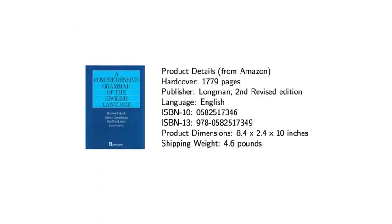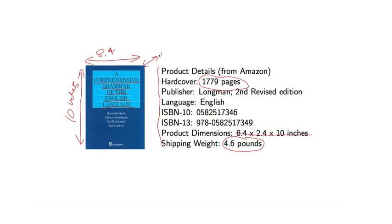Just to emphasize how formidable a task building a grammar of English might be, this is a book. I brought up the product details from Amazon. It's a book called A Comprehensive Grammar of the English Language. It's a very famous book about English grammar. It is close to 2,000 pages in length. It weighs almost 5 pounds. It's a large book. It is 10 inches on this dimension, 8.4 inches on this dimension, and over 2 inches thick.